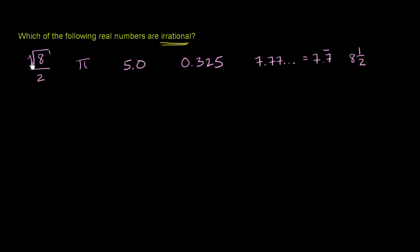So let's see what we have here. We have the square root of 8 over 2. The square root of 8, if you take the square root of a number that is not a perfect square, it is going to be irrational.